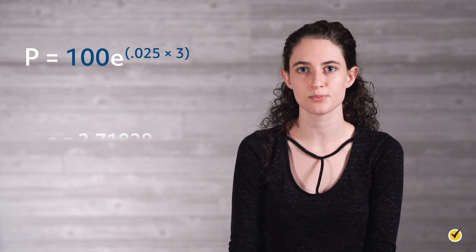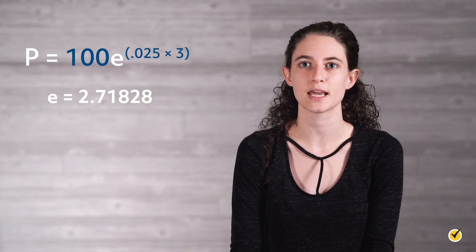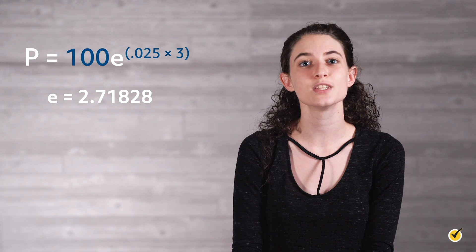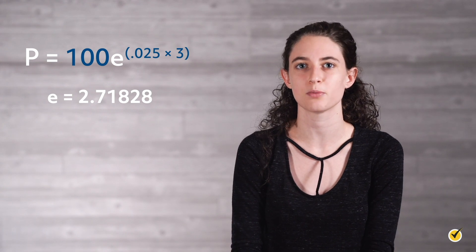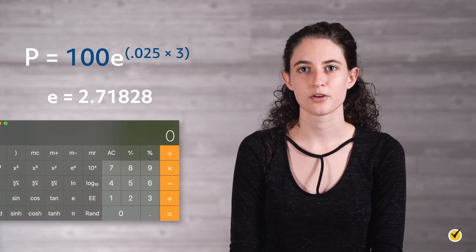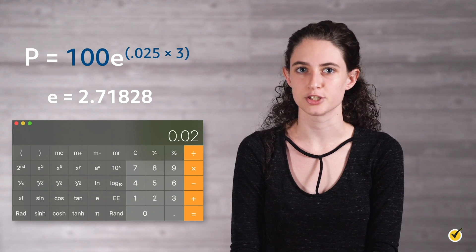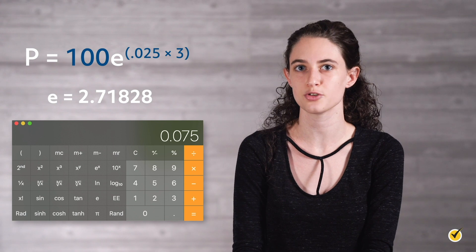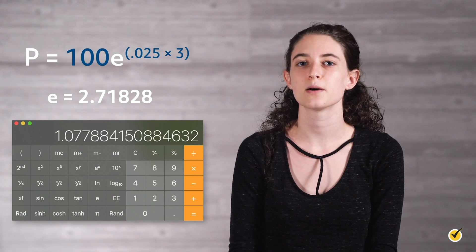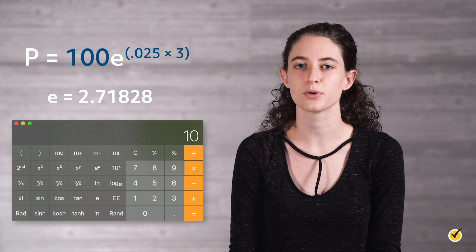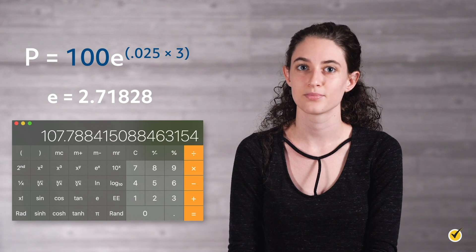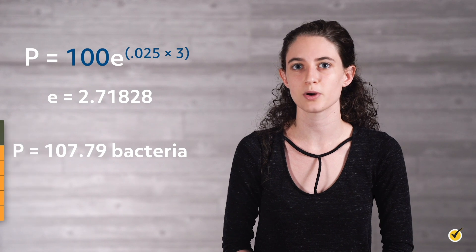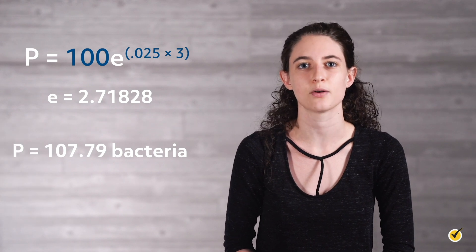For e, you can use the approximate value of 2.71828 if you do not have a scientific calculator. We need to use this information to determine the final population p. Using a calculator to compute the final population, p equals 100 times e to the 0.025 times 3, we get that p equals 107.79 bacteria. In words, the bacteria in the sample grew from 100 to approximately 108 in 3 hours.